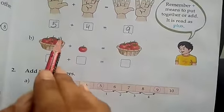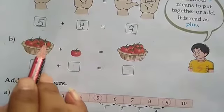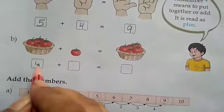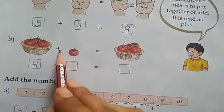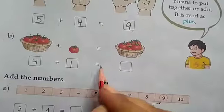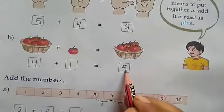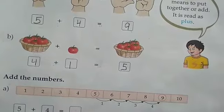Same for the next one. In the bucket here are tomatoes. How many? 1, 2, 3, 4. Write 4 in that box. Plus how many tomatoes? 1. Write 1 here. 4 plus 1 equals 5. Total tomatoes is 5.